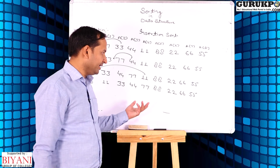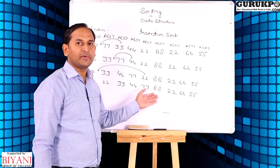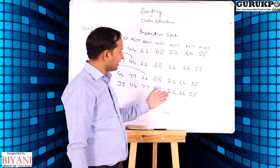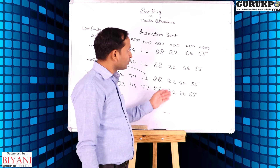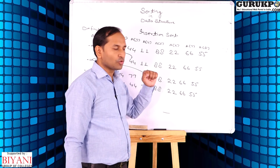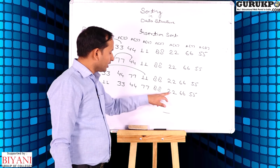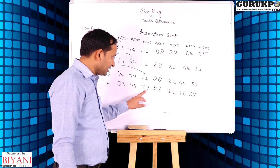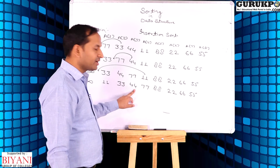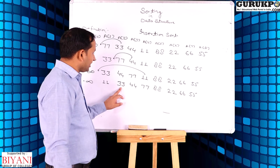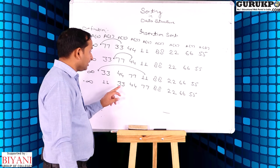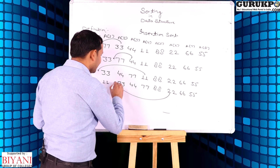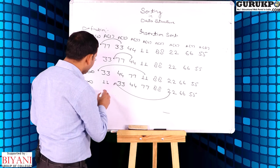Now we take 88 — it is already in sorted position, so there is no requirement of any insertion here. Now we take 22, which is stored in the 6th location. We compare 22 to 88 — less than. Less than 77, less than 44, less than 33, but 22 is greater than 11. So the exact position of 22 is in between 11 and 33.